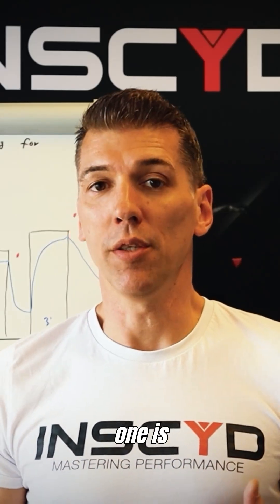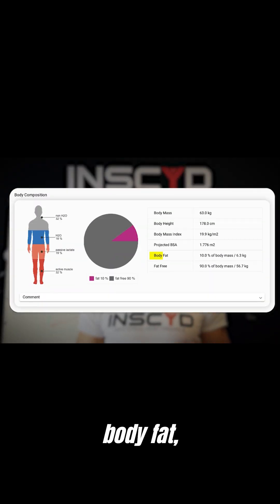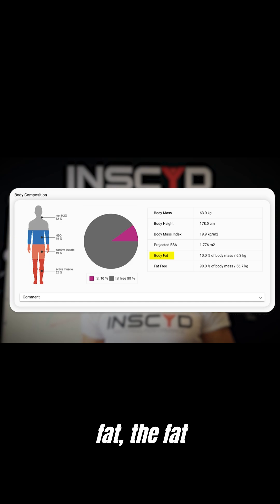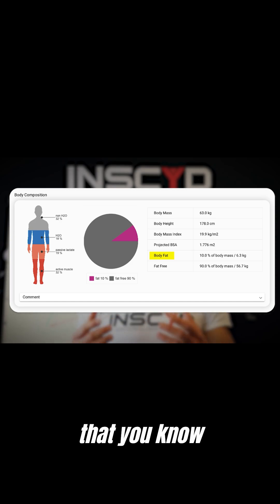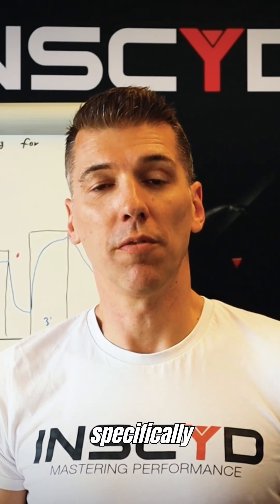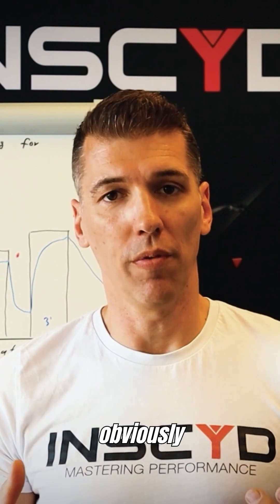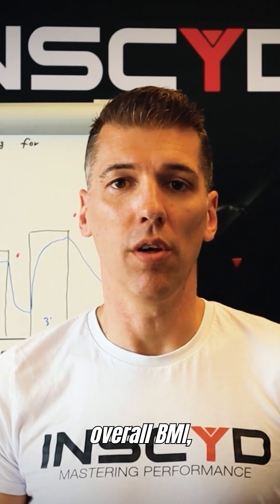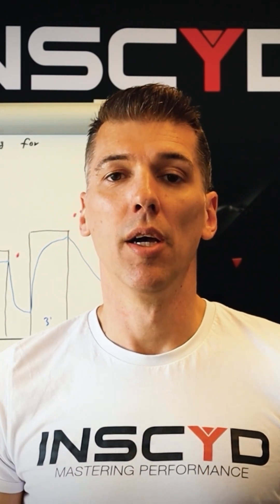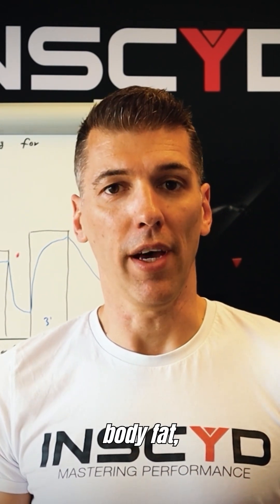An overarching metric is body composition, specifically body fat — visceral body fat. The fat that surrounds the organs is something we're particularly interested in, but also overall BMI, body mass index, and overall body fat.